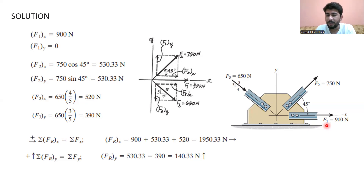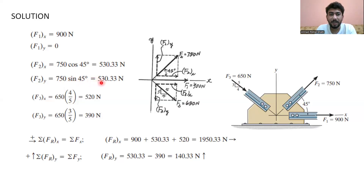In case of force F1, we have only a horizontal force in the positive x-direction, which is 900 newtons. In case of force F2, which makes an angle with the x-axis, we have 750 newtons. The horizontal component is 750 multiplied by cosine 45 degrees, which equals 530.33 newtons, and the vertical component is 750 multiplied by sine 45 degrees, which equals 530.33 newtons.